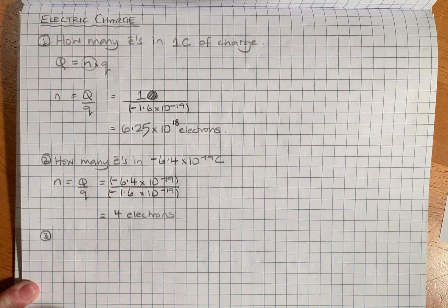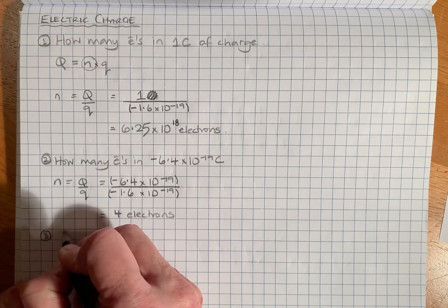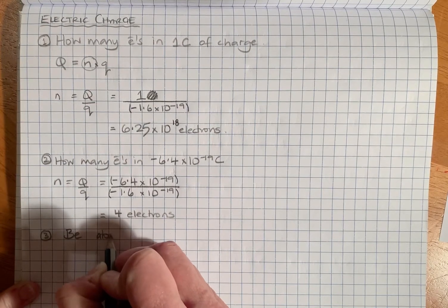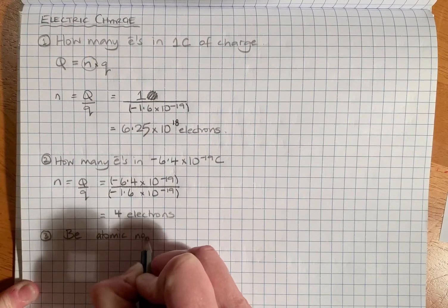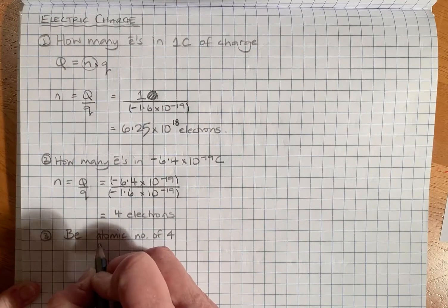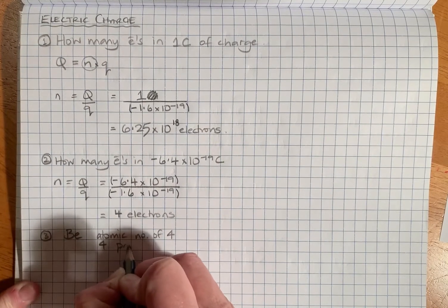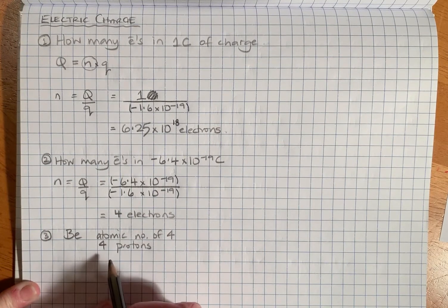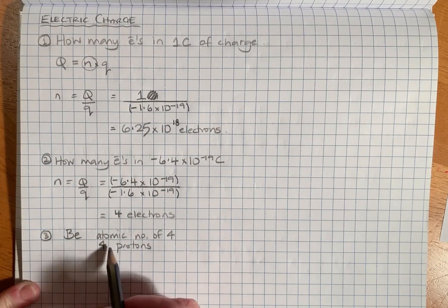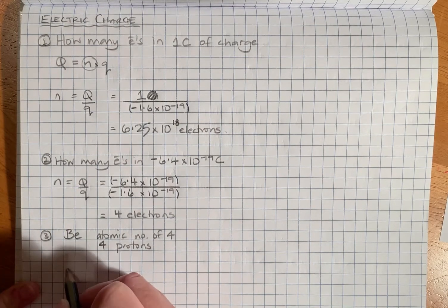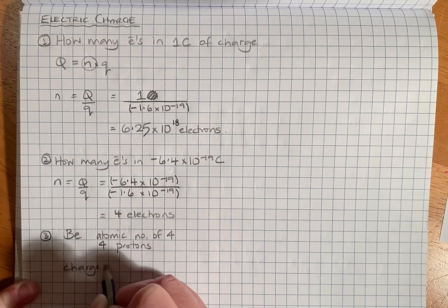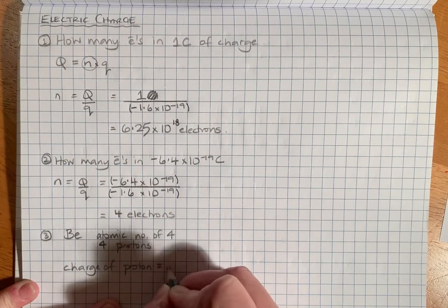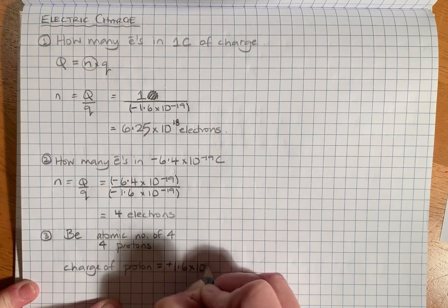Question three is asking what is the charge of a beryllium nucleus? Beryllium has an atomic number of four, so in the nucleus there must be four protons. Remember that there is no charge on the neutrons in there.